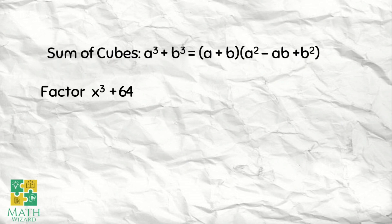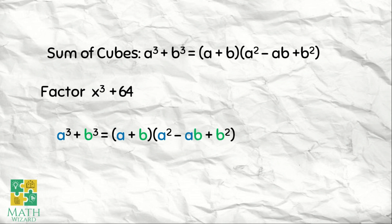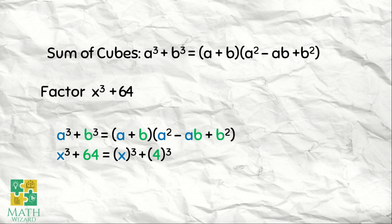Another example: factor X cubed plus 64. Ano yung cube root ng 64? That's 4. Kung kabisado mo yung cubic number, masasagutan mo agad yun. Since it's a sum of cubes, we use the formula: A cubed plus B cubed is equal to A plus B times A squared minus AB plus B squared. The first step: we put it in cubic form. So it becomes X cubed plus 4 raised to 3, kasi 4 times 4 times 4 is equal to 64.